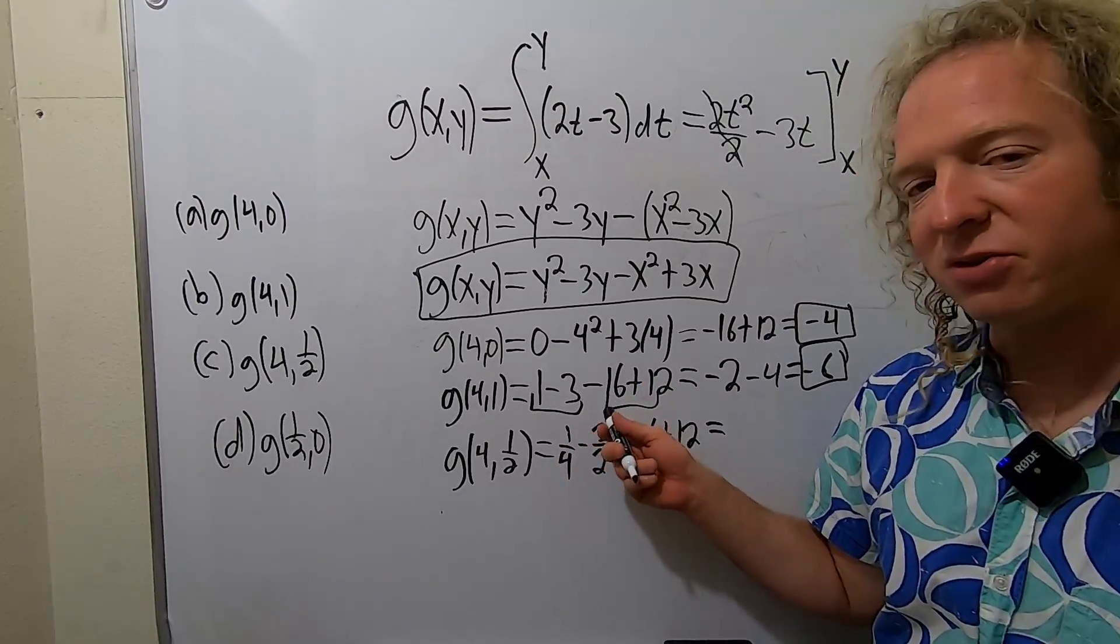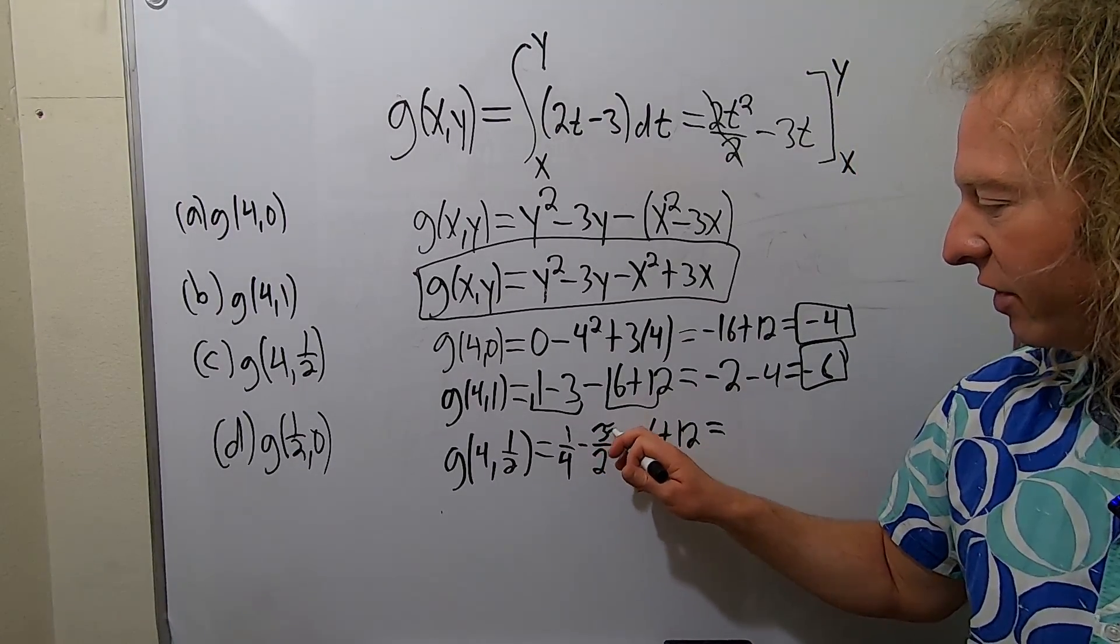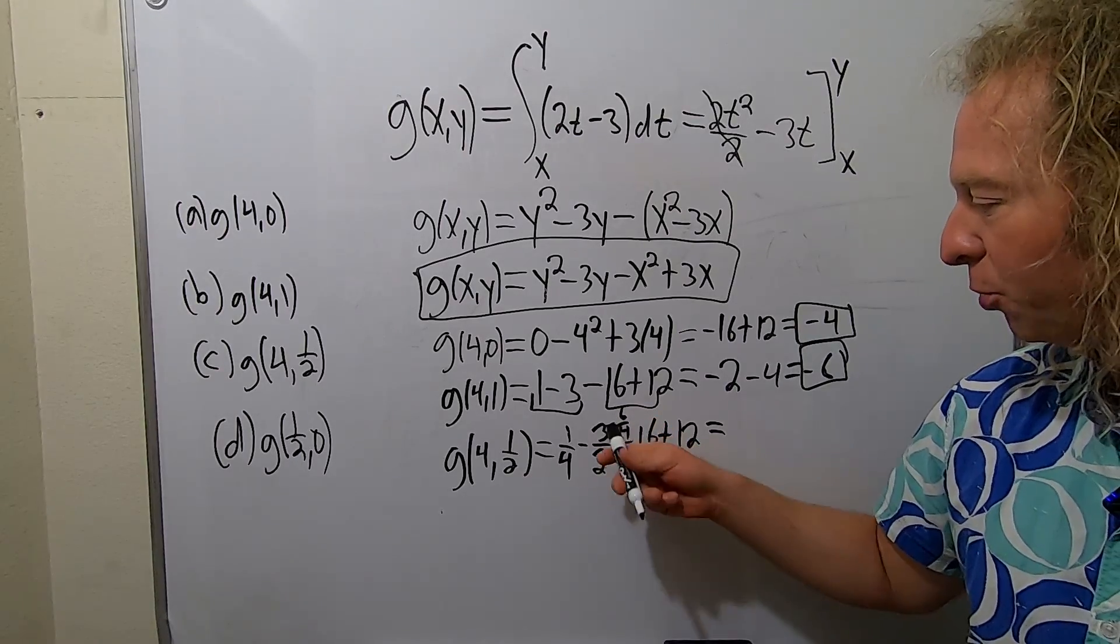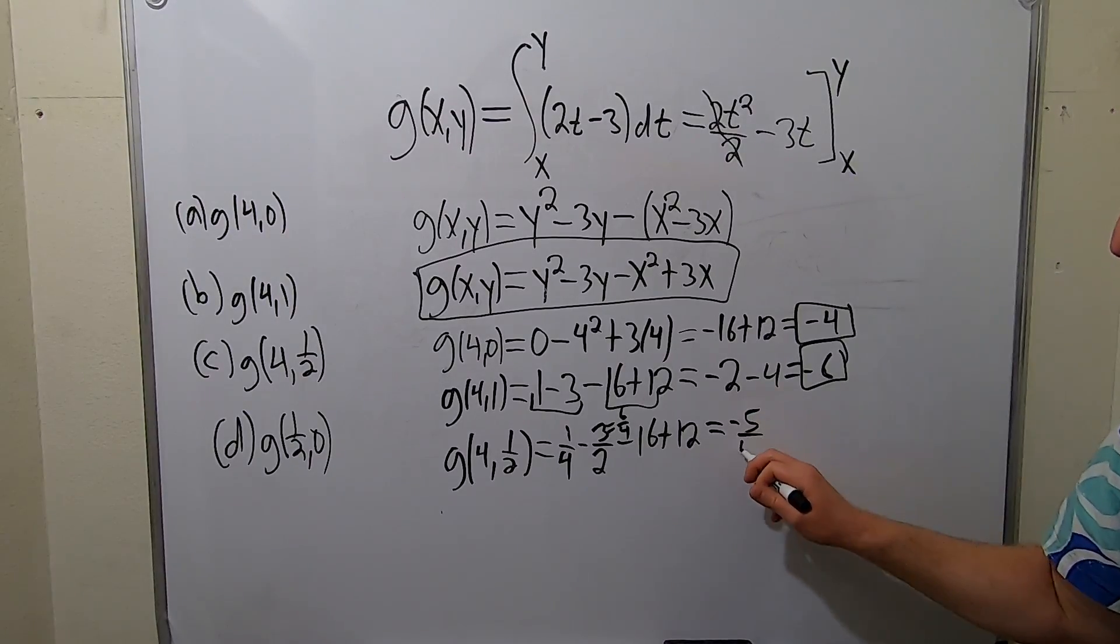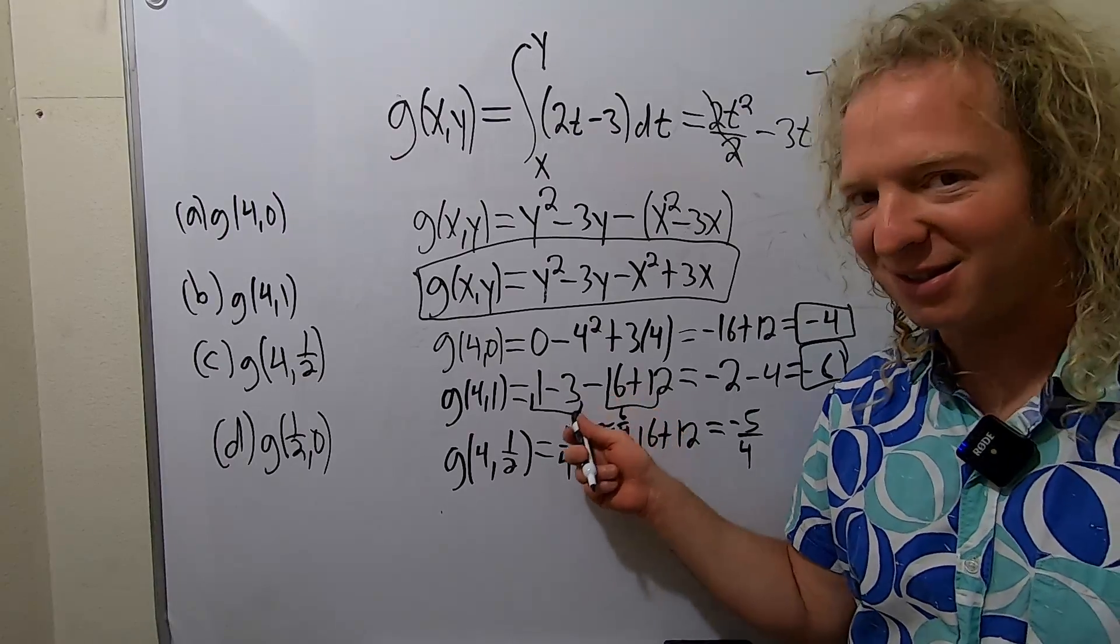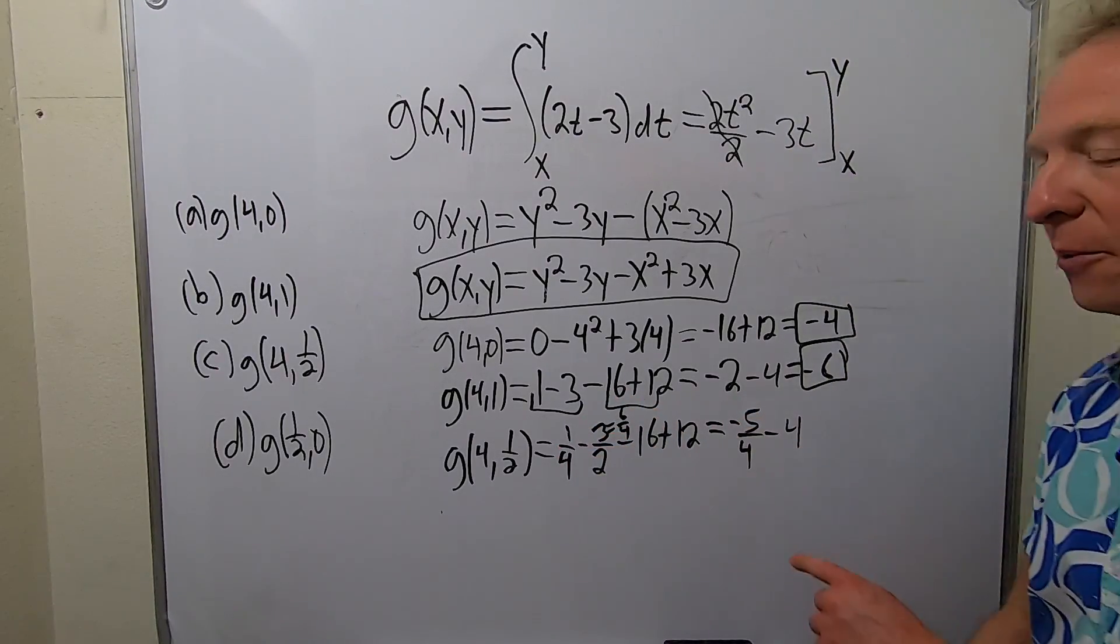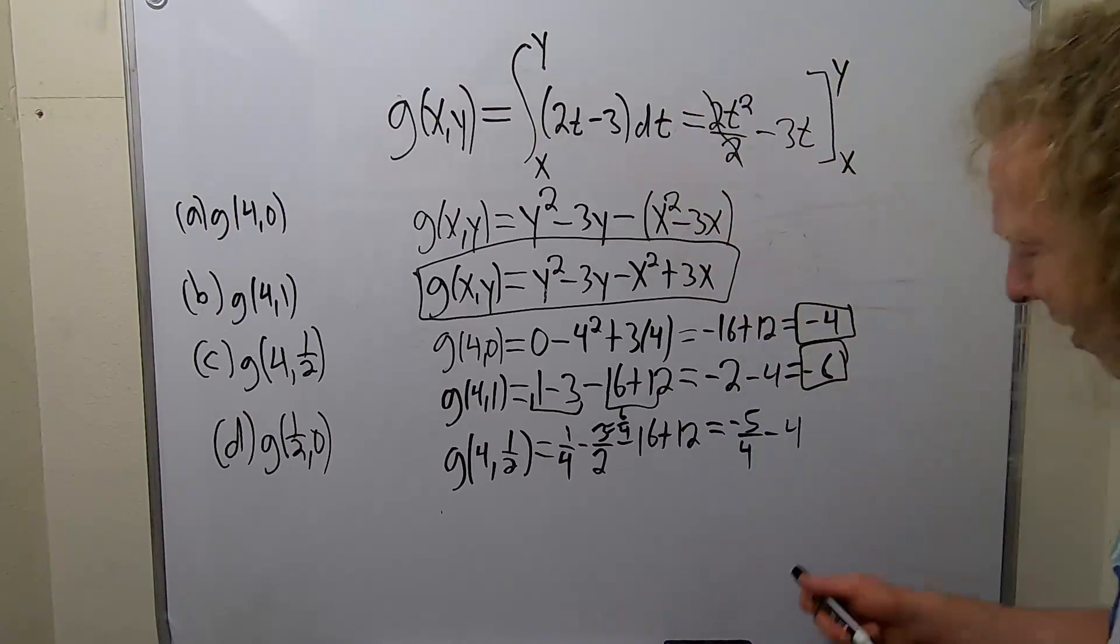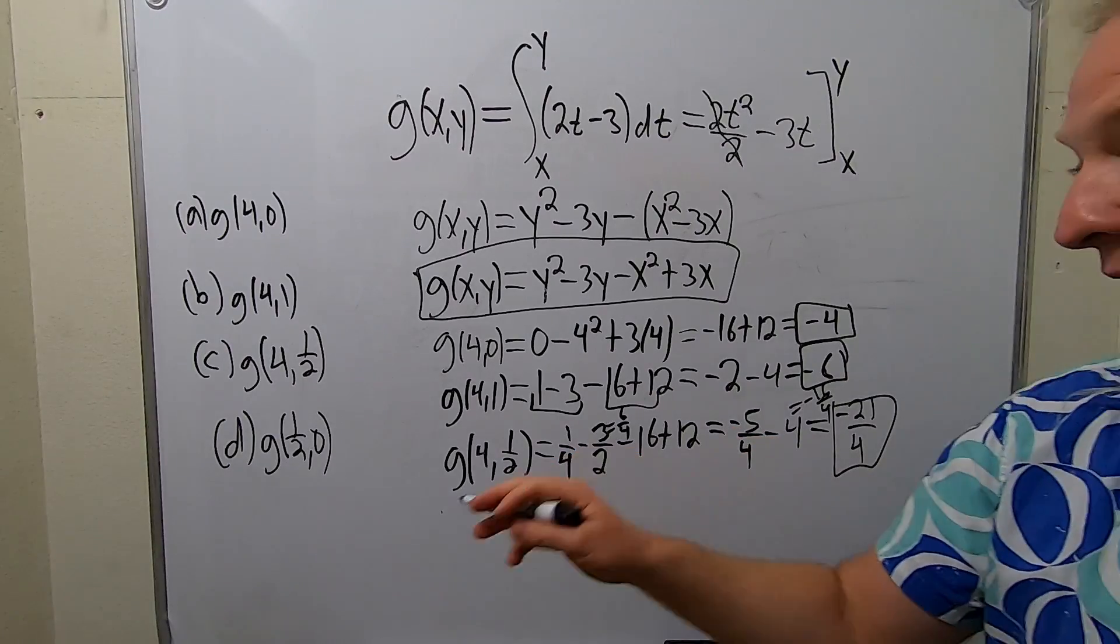So 1 fourth minus 3 halves. When you're doing stuff like this, think of 3 halves as 6 fourths by multiplying by 2 over 2. So it's 1 fourth minus 6 fourths, that's negative 5 fourths. And then minus 4. Think of 4 as 16 fourths. So negative 5 fourths minus 16 fourths is negative 6 fourths. That's how pros do it. Works out okay, last one.